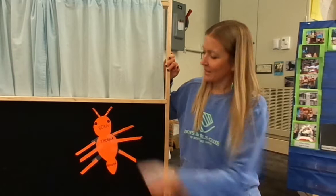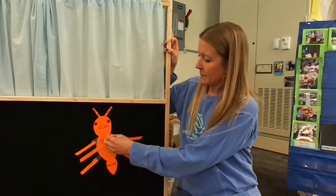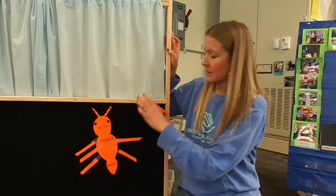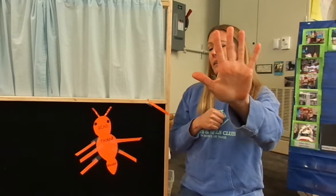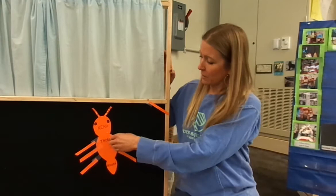Our friend has six legs. What would happen if I took one leg away? We had six, we took one away — now we have five legs. Let's count them: one, two, three, four, five. Good job! Now let's take three away from our friend.